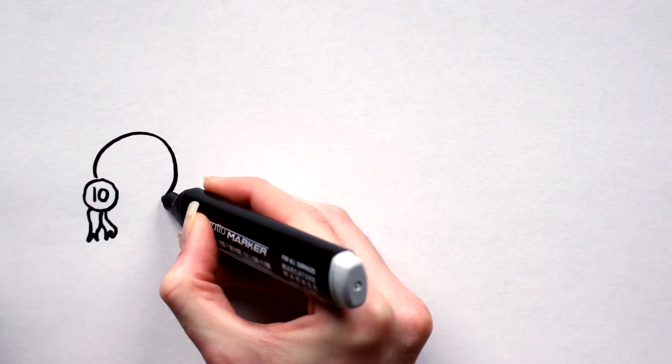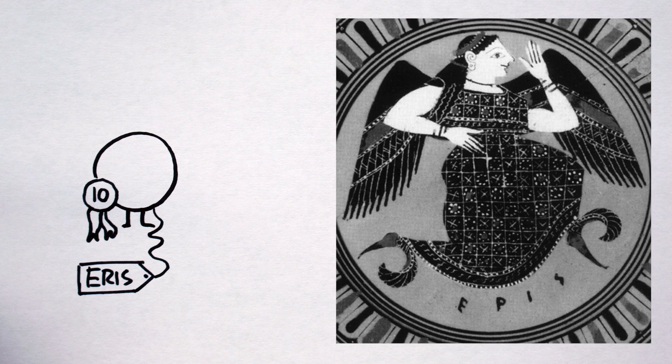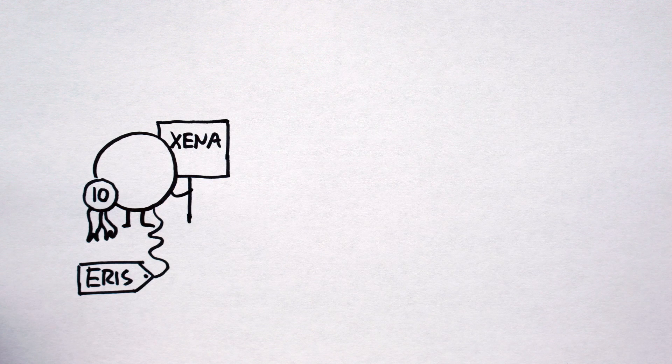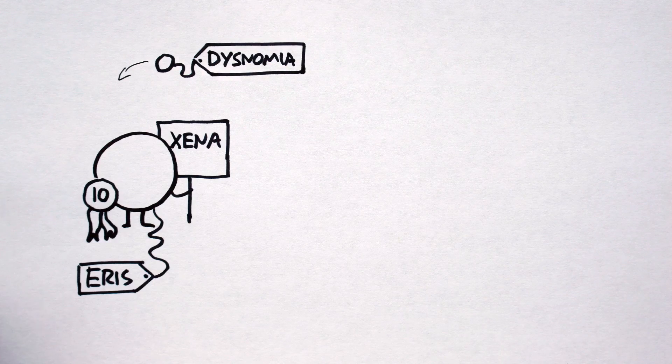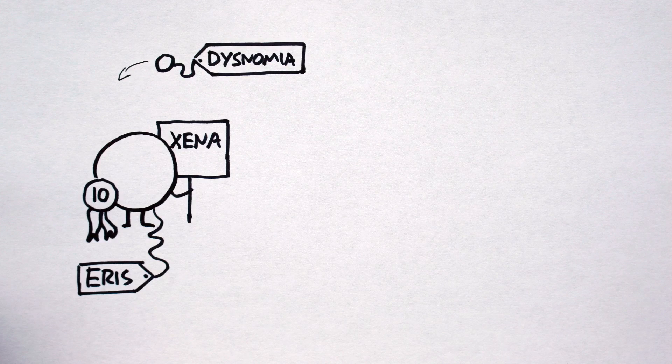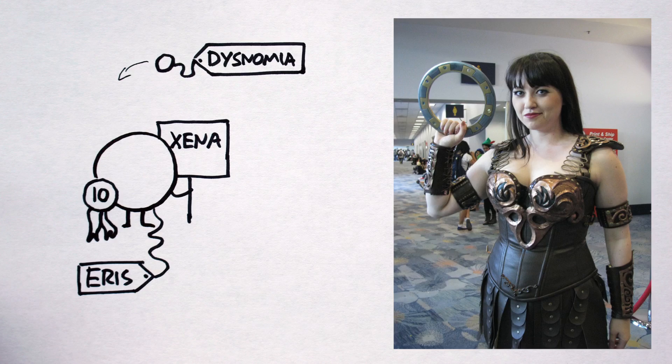Also, they named the once tenth planet Eris, after, bear in mind the fallout around Pluto's demotion, the Greek goddess of chaos, discord, and strife. And before she was called Eris, the planet's nickname was Xena, so they named her moon Dysnomia, after, wait for it, the demon spirit of lawlessness. Get it? Lawless?